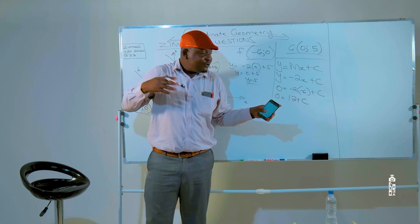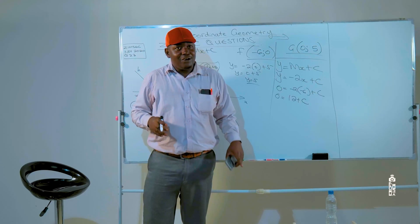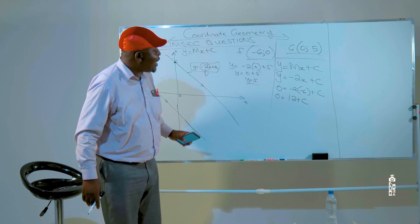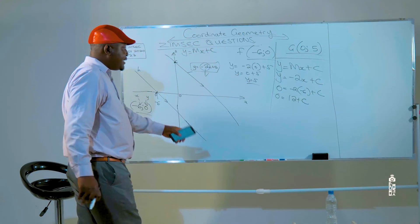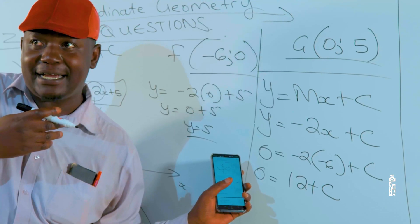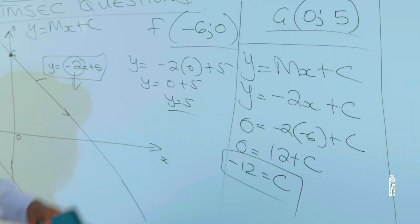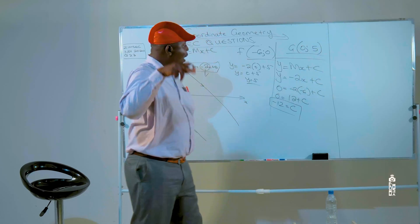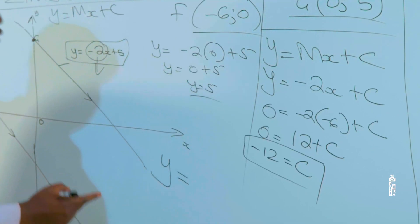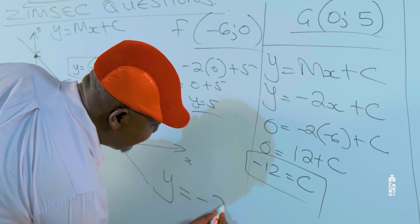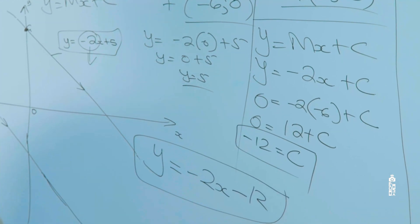You must always be very, very careful, very meticulous when you are dealing with these mathematical problems. So, the value of c in this case, 12 is going to be equal to c. So, the value of c is minus 12. The value of m we already have. So, the equation of this line h is going to be y is equal to minus 2x minus 12. And for that effort, you are going to get two marks.